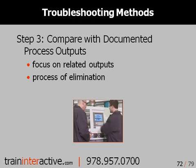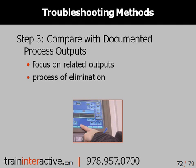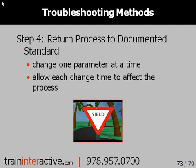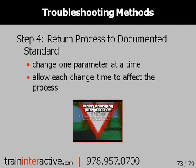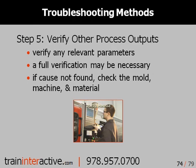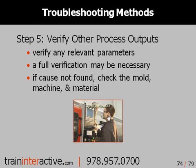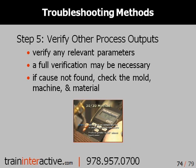Compare the current process with the documented process. Without proper documentation, troubleshooting can only guess what has changed. Make the changes necessary to correct the defect and return the process back to the standard. Once the defect is corrected, verify that your process is running to the standard, as this helps prevent other defects from occurring in the future.